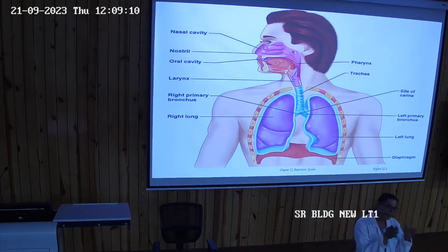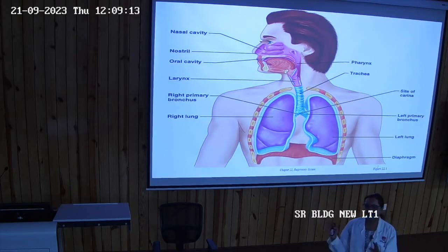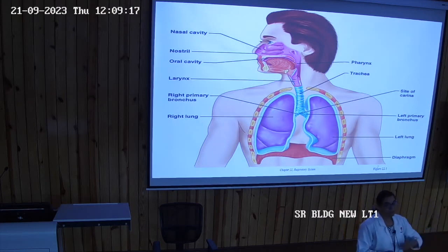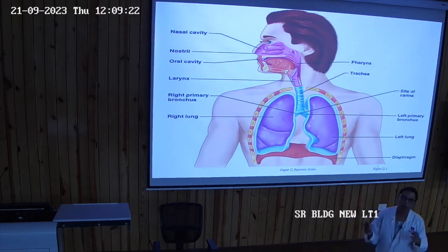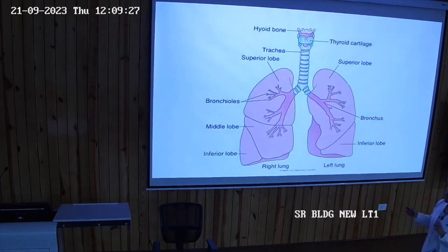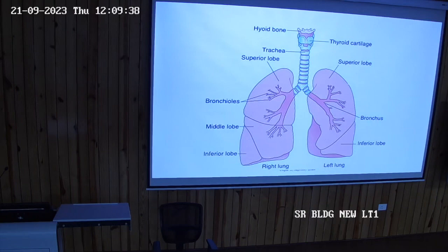The bronchiole may be a terminal bronchiole or a respiratory bronchiole. At the level of the respiratory bronchiole, gaseous exchange takes place and then the alveoli are formed. The important difference is the presence or absence of cartilage.